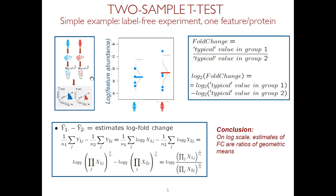We work on a log scale, and the reason is that statistical properties are much easier to deal with when things are additive — when we consider sums or differences rather than ratios. If we want to compare two groups, we consider a fold change of protein abundance between them. Because each group has many subjects, we use a representative summary value for each group. The log of the fold change is simply the difference of the logs of those individual values.